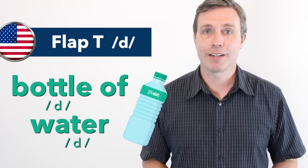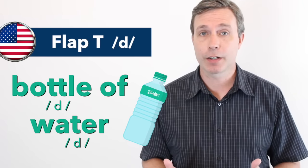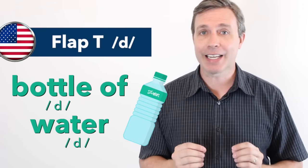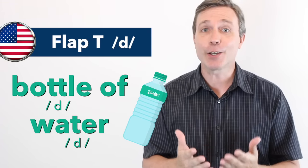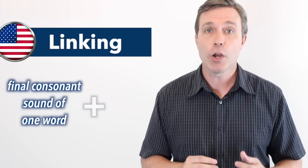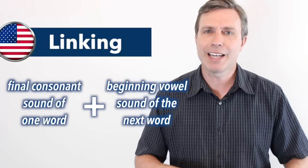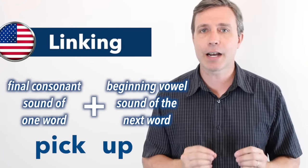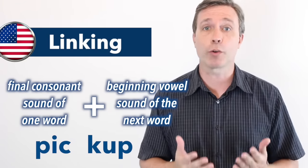Bottle of water. Repeat after me: bottle of water. Now, if you were saying it the same way I was, then you were linking a couple of different words. That's the next thing I want to talk about: linking. This is part of connected speech. It's when you link the final consonant sound of one word with the beginning vowel sound of the next word — it's almost like you're taking that consonant sound and moving it over to the next syllable. Linking is not specific to the American accent; other English varieties use linking as well as other languages. But it does help give the accent part of its rhythm and flow.